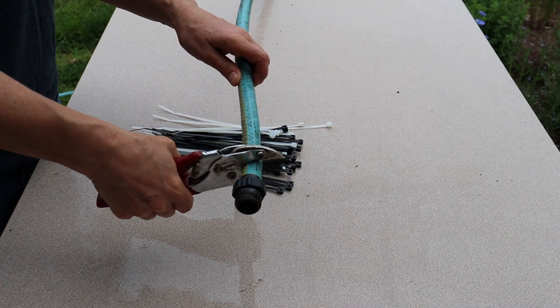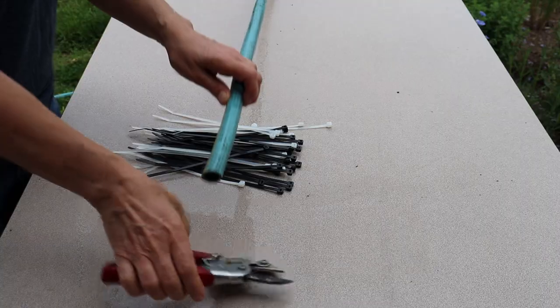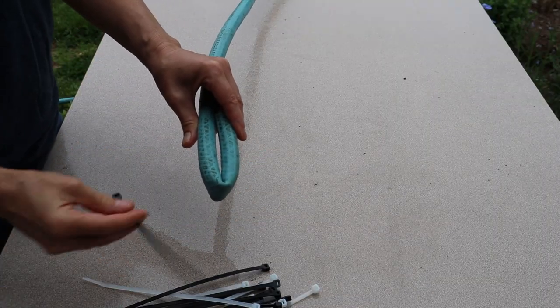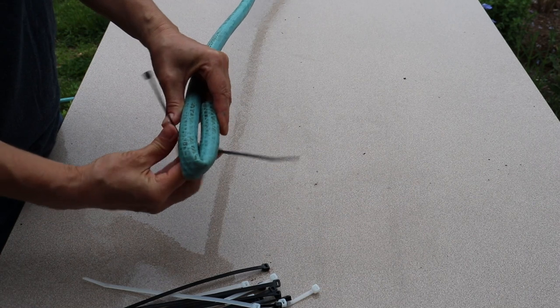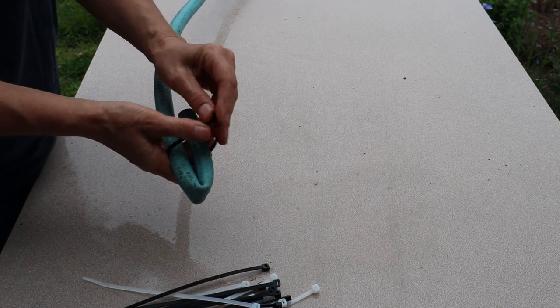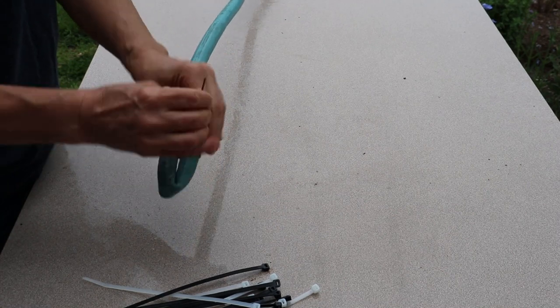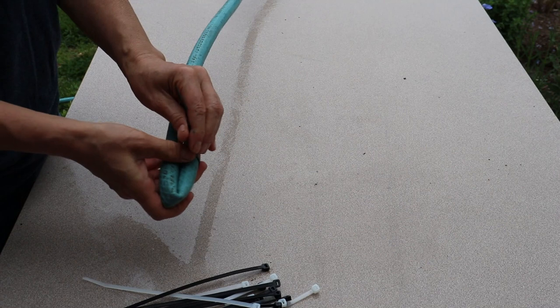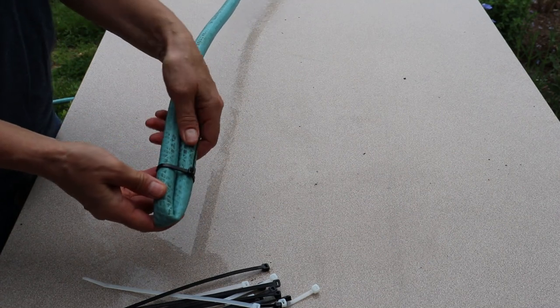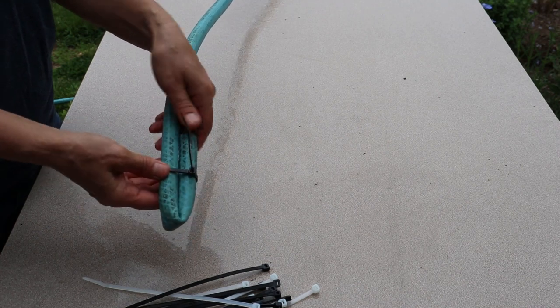First you want to cut the end off of your hose. A pair of garden nippers works pretty well for that. Then fold the end of your garden hose in like so. Get a zip tie, and zip tie it together. Now you're gonna have a bunch of these little edges. That's not a problem. Keep them all on the same side and we'll nip them off when we're done.